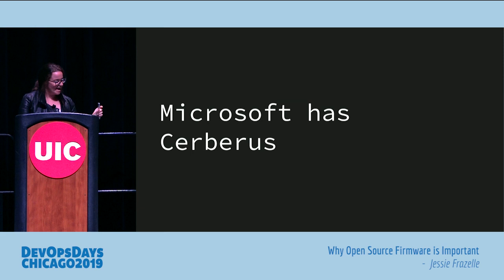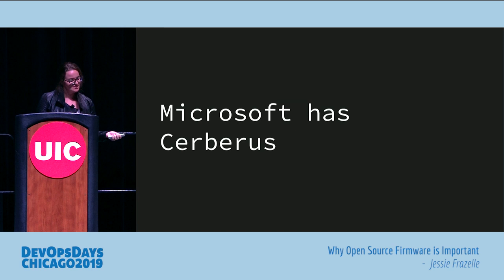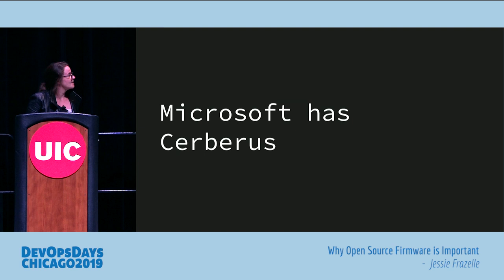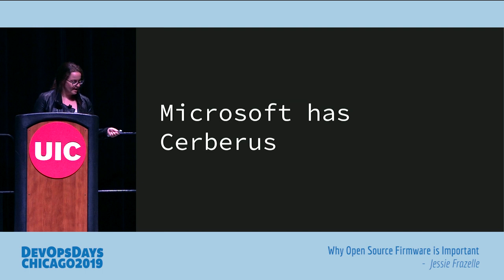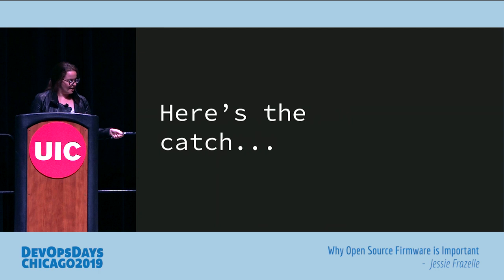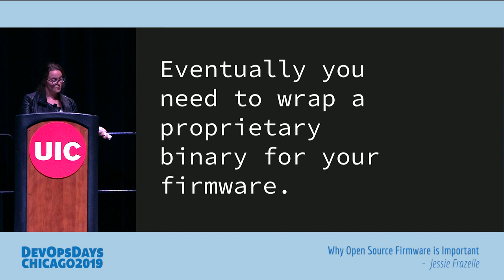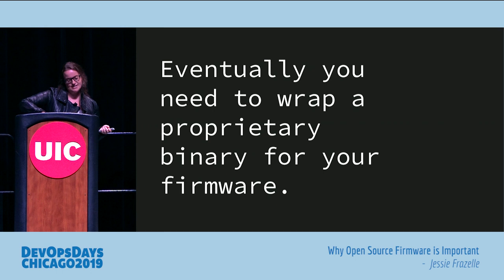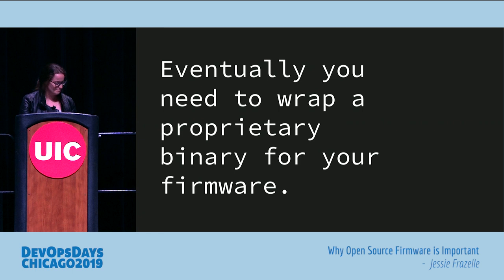Microsoft has Cerberus. The specs for Cerberus are open source on GitHub and part of the Open Compute Project, but there's no actual code. If you ask someone at Microsoft if it's open source, they say it's on GitHub — but that's just a spec. No idea if they'll open source the rest. The catch is that eventually you'll need to wrap a proprietary binary for your firmware. It would be cool if vendors gave you all open source firmware, because then you could verify without a doubt that even the proprietary binary wasn't backdoored — especially if you're a government agency.